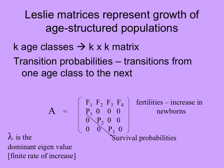The Leslie matrix A is a k-by-k matrix, where k is the number of age classes. The top row contains the fertilities of each age class — how many seeds they could produce. Along the diagonal is the probability of staying the same, and each of the other elements is a transition probability. The dominant eigenvalue of this matrix is lambda.